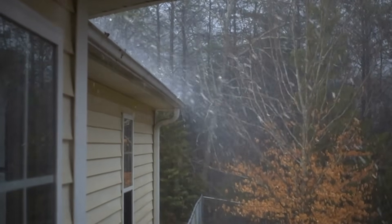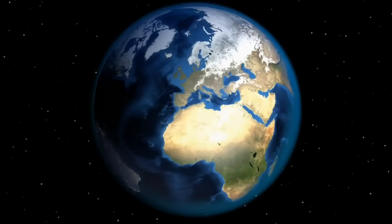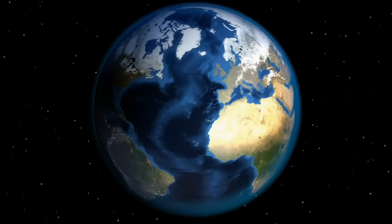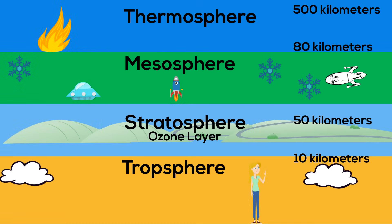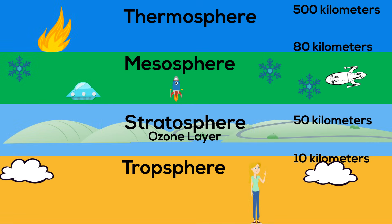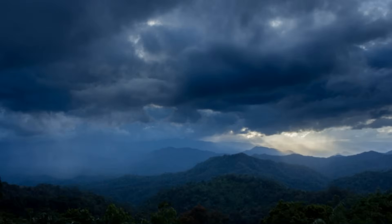The earth is surrounded by an atmosphere. The lowest portion of this atmosphere is called the troposphere. This heating and cooling of the troposphere can create severe weather. The heating and cooling produces clouds and moisture and wind, which can lead to severe storms.